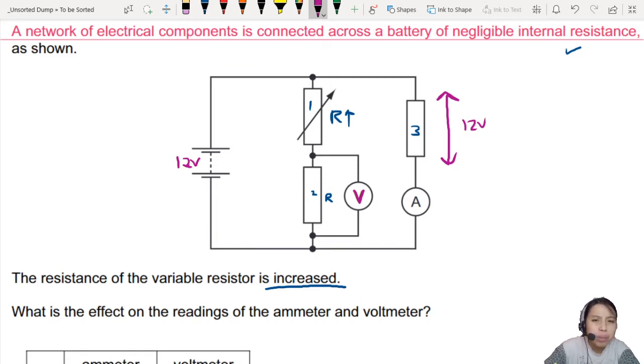So what happens when you have this fellow's resistance increasing and this fellow is still the same resistance? So I'll lay out the steps for you. Number 1, if we are thinking of voltage, potential difference, when the resistance increase, that means the potential difference across the first resistor will also increase.